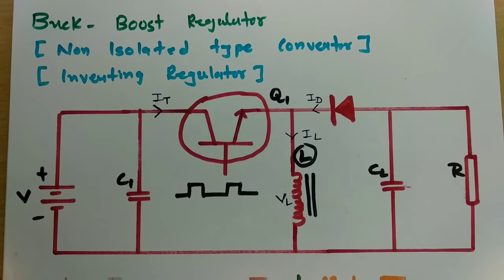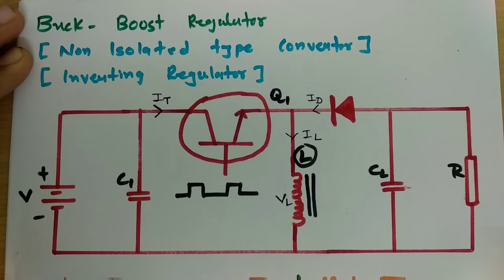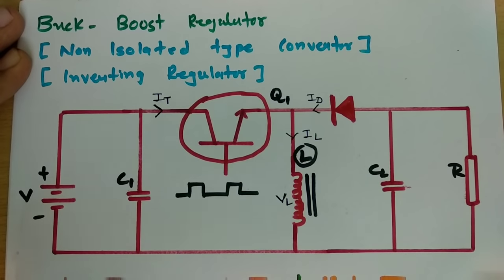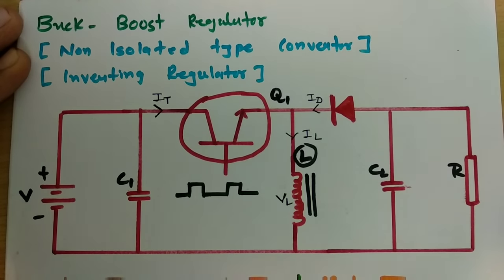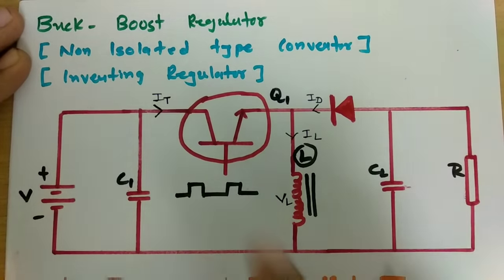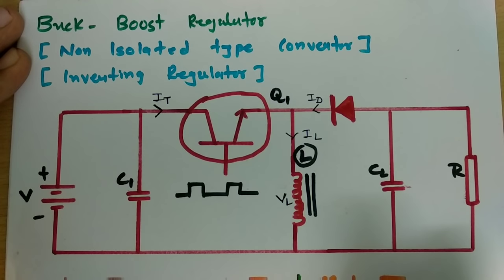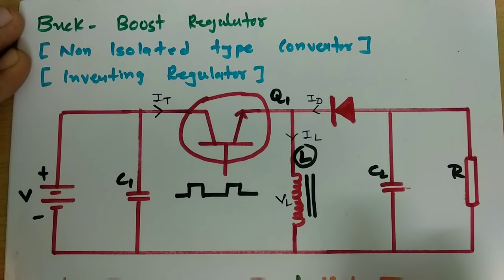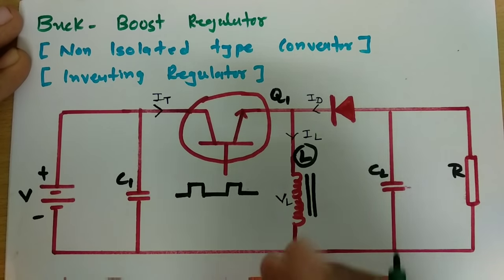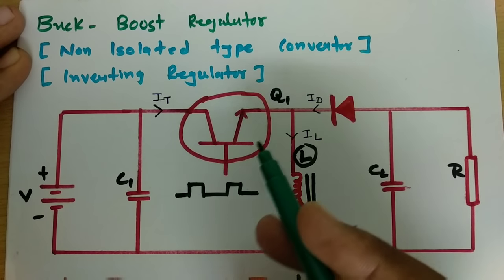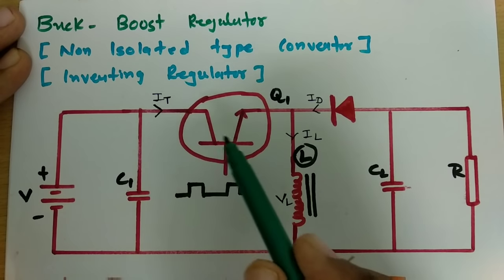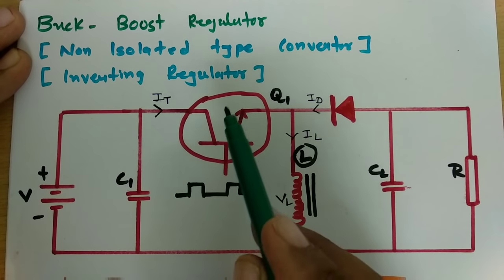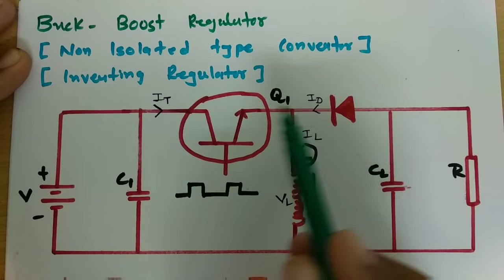Welcome to the power electronics lecture series. In this session I will be explaining the buck-boost converter. That is a non-isolated type converter and is also referred to as an inverting regulator. In today's session I will explain how this buck-boost converter functions and show how waveforms appear, and in the next session I will derive why this converter can function as both a buck and boost converter.